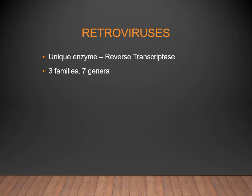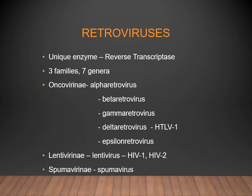Retroviruses have three families and seven genera. The three families are Oncovirinae, Lentivirinae, and Spumavirinae. Within Oncovirinae there are genera: alpha, beta, gamma, delta, and epsilon retrovirus. The important HIV virus belongs to the Lentivirinae family, and its genus is Lentivirus.